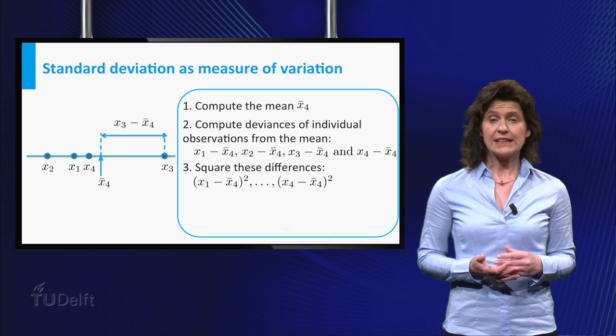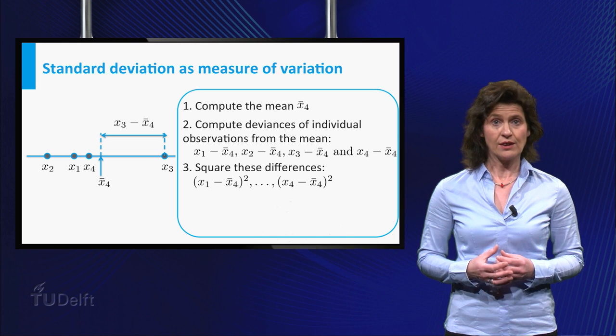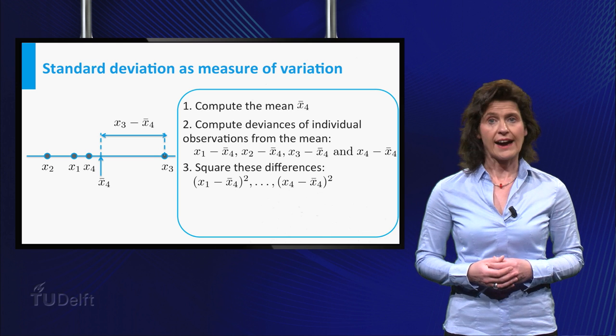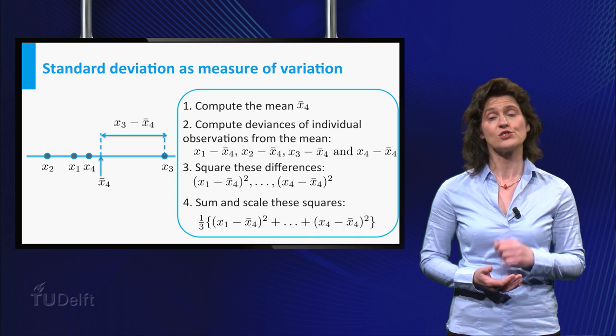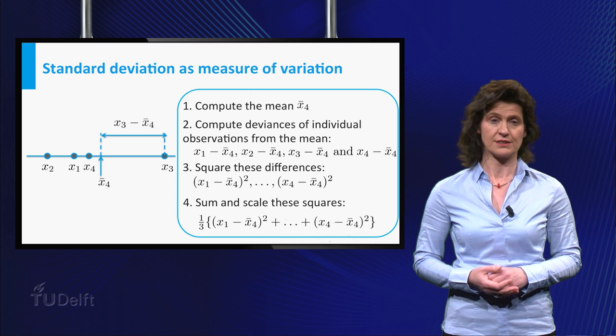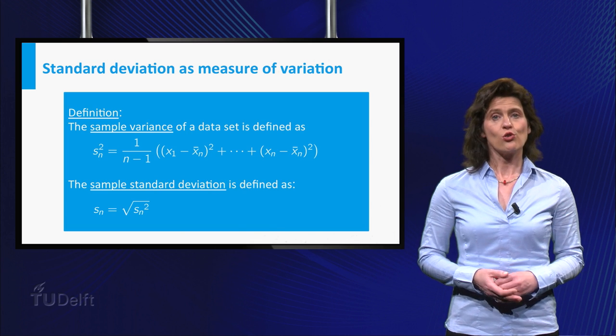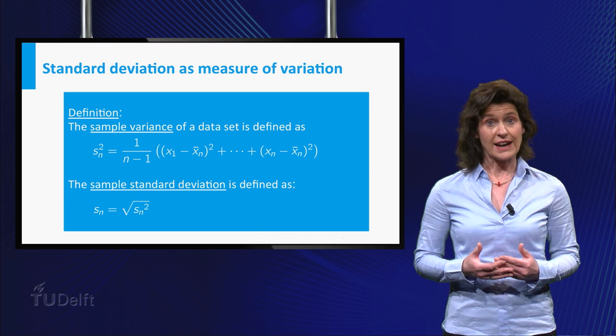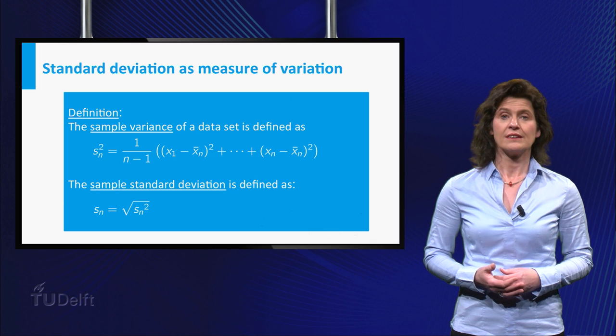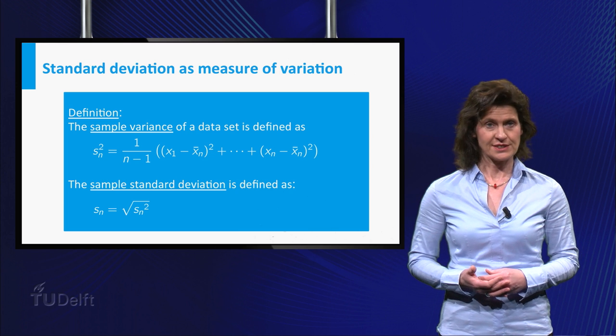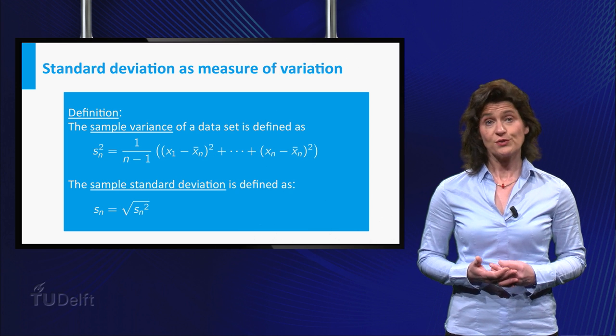This way you obtain four non-negative numbers. It is intuitively clear that high variation in the data will yield on average high value of these square differences. Then, sum and scale these squares. The so-called sample variance is defined by this formula and computed by this procedure. Finally, the standard deviation is the square root of the sample variance.